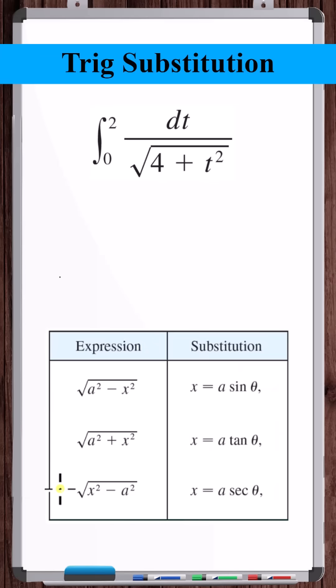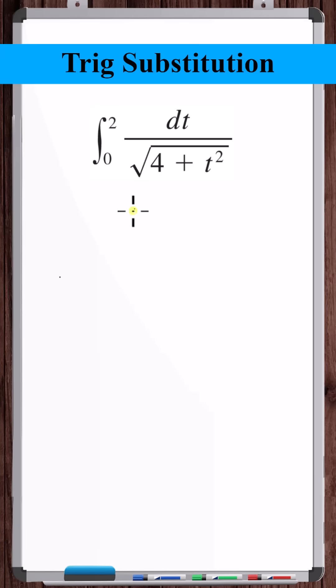Here are the three options for a trig substitution. We've got 2 squared plus variable squared, this form. So we want to make the substitution that t is equal to 2 tangent theta.